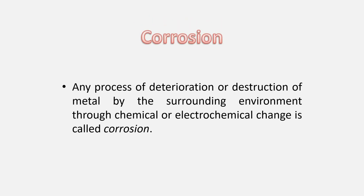Corrosion is a process of deterioration — that means slow degradation or destruction, meaning complete damage of metal by the surrounding environment. That environment may be air, water, soil, etc., depending on where we are using the metals. This occurs through chemical or electrochemical reaction, where the surrounding environment reacts chemically or electrochemically with the metals, which leads to the process called corrosion.